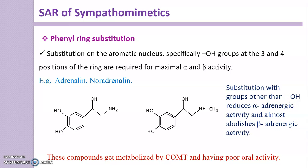Substitution with groups other than OH reduces alpha adrenergic activity and almost abolishes beta adrenergic activity. So the benzene ring must have a hydroxyl group, which is the beneficial substitution. Any other substitution may reduce alpha adrenergic activity and will totally abolish beta adrenergic activity.